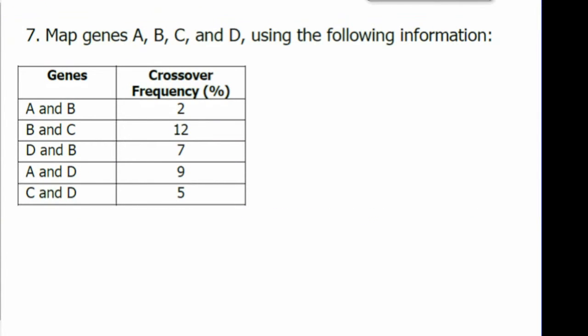Let's do one more example. Again, starting with the genes that are furthest apart. We're going to start with B and C. We'll place B on 0 and C at 12. Next we'll look for two genes or a gene that has reference to both B and C, which would be D. The distance between D and B is 7. And C and D is 5.